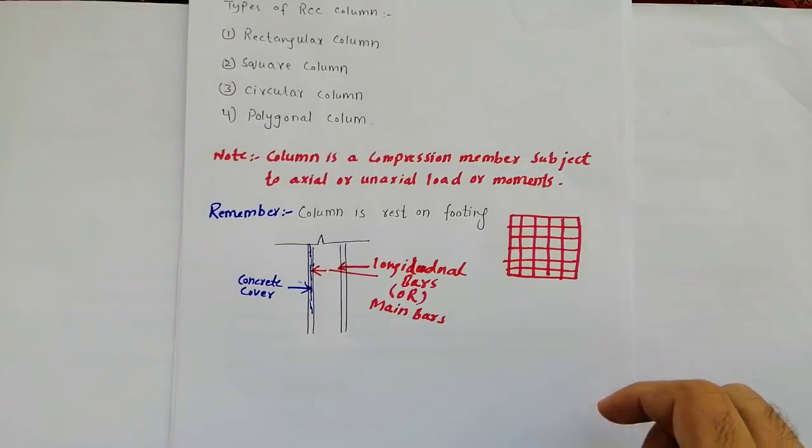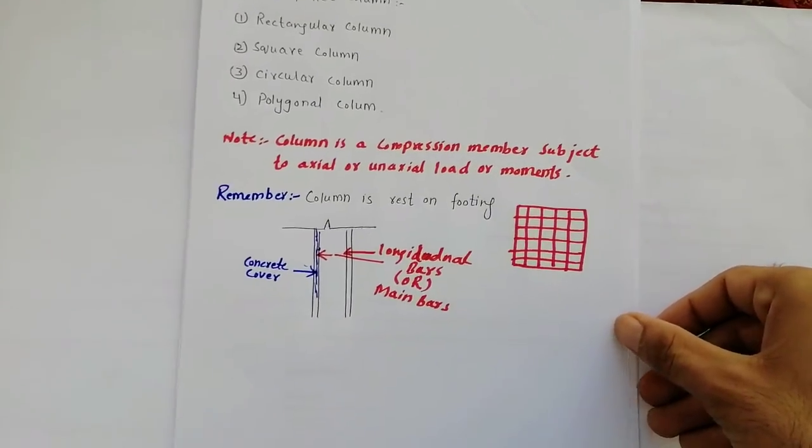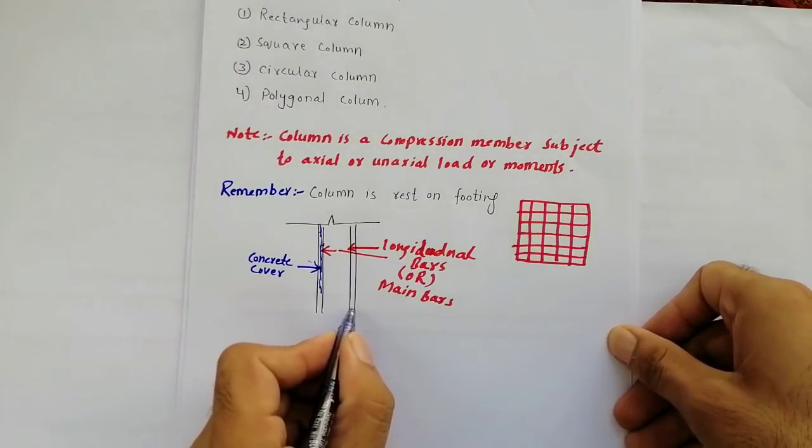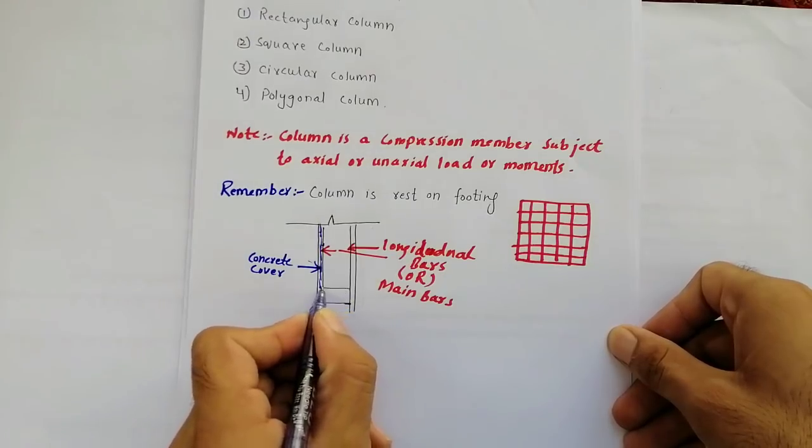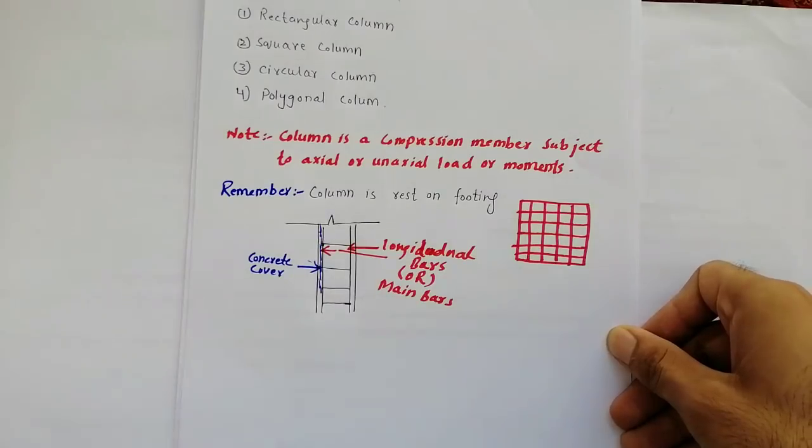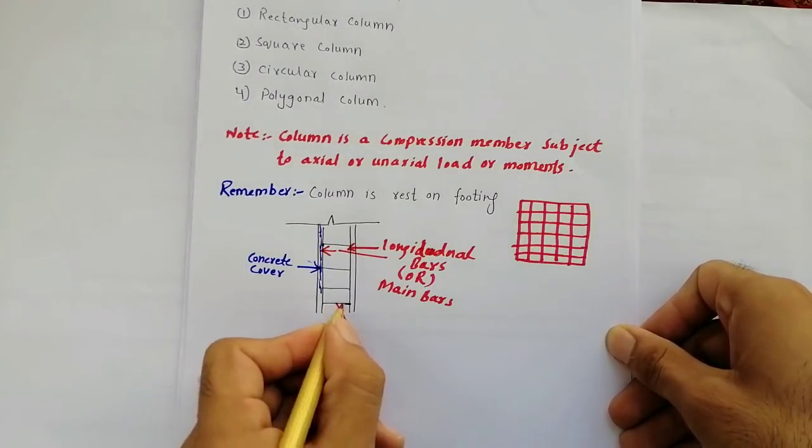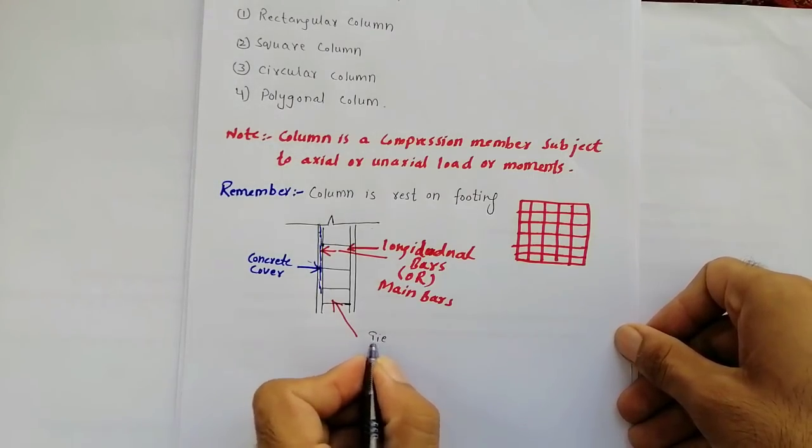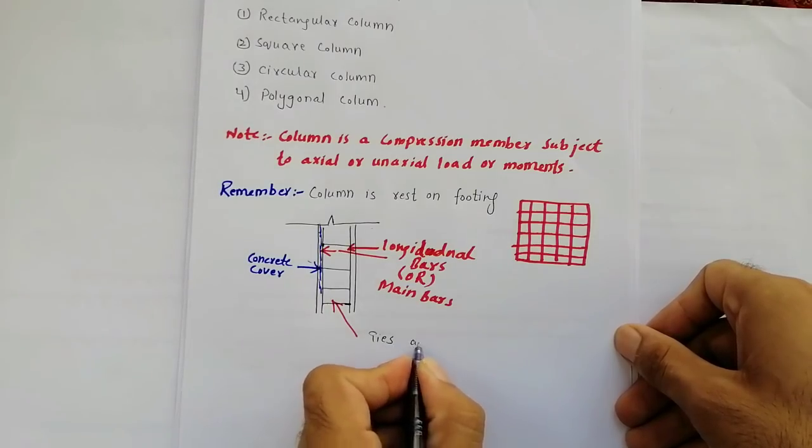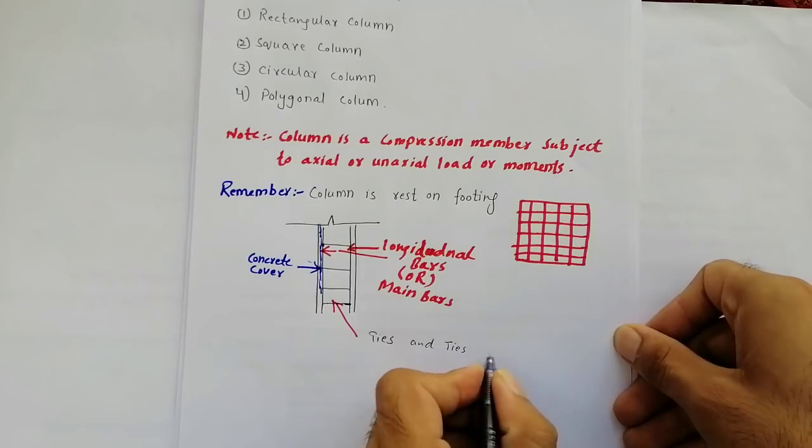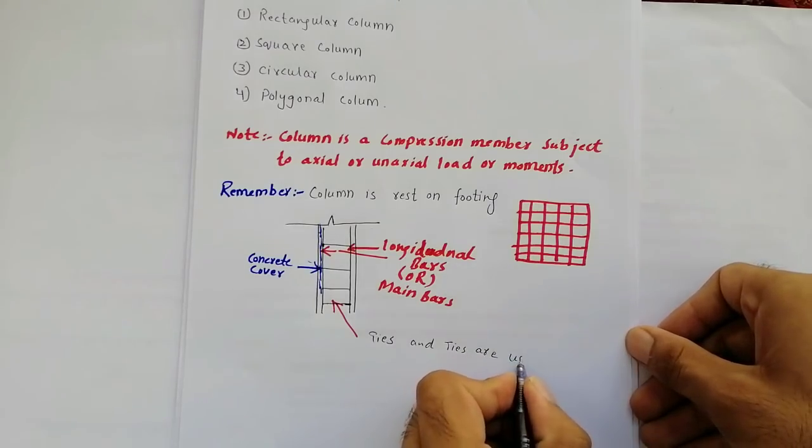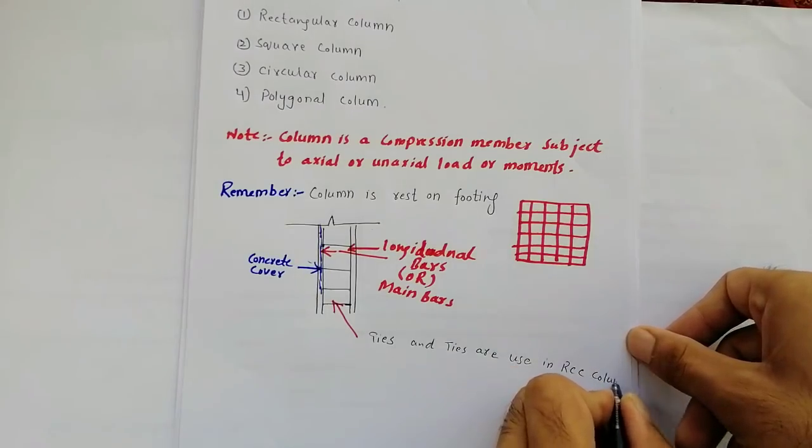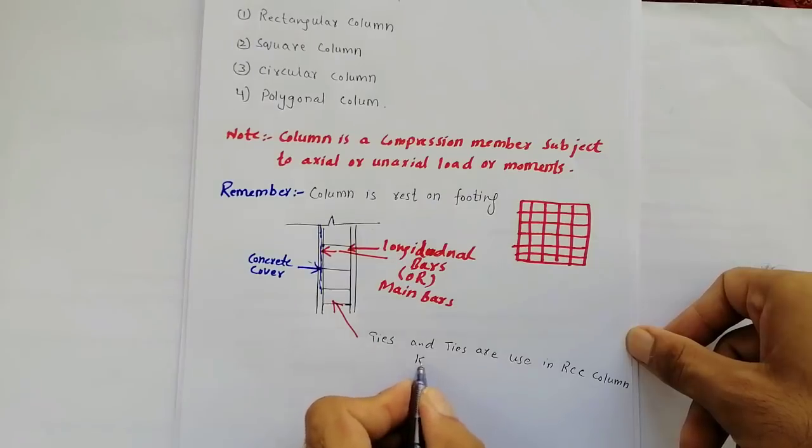So here this is cross section, but I did not show here ties. Again you can see that these are called ties. These are called ties. Ties are used in RCC column to keep main reinforcement or longitudinal bar.